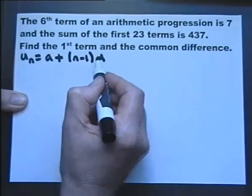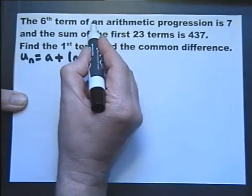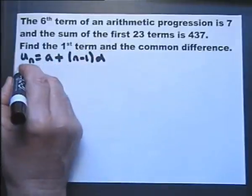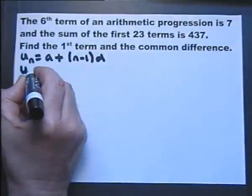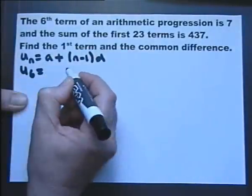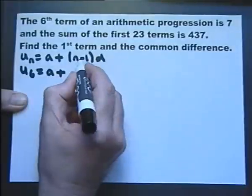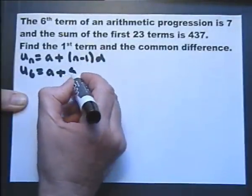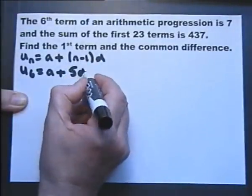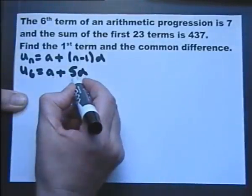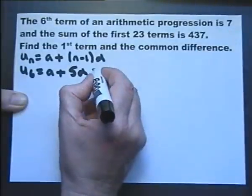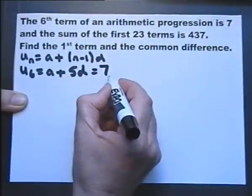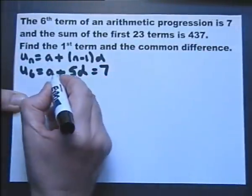Let's use that formula with the information in the first sentence. The sixth term means n is 6, so we write A plus (6 minus 1)D, which is A plus 5D. And we know that the sixth term is 7. So there we have an equation with A and D.